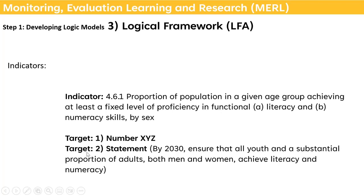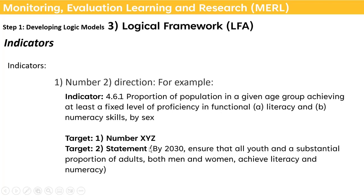For the target, you can write the same indicator as a statement: by 2030, a substantial proportion of my beneficiaries achieve literacy and numeracy. You then need to add your specific beneficiary target. This is a basic example taken from the Sustainable Development Goals. For an indicator, you must address both the indicator itself and the target.